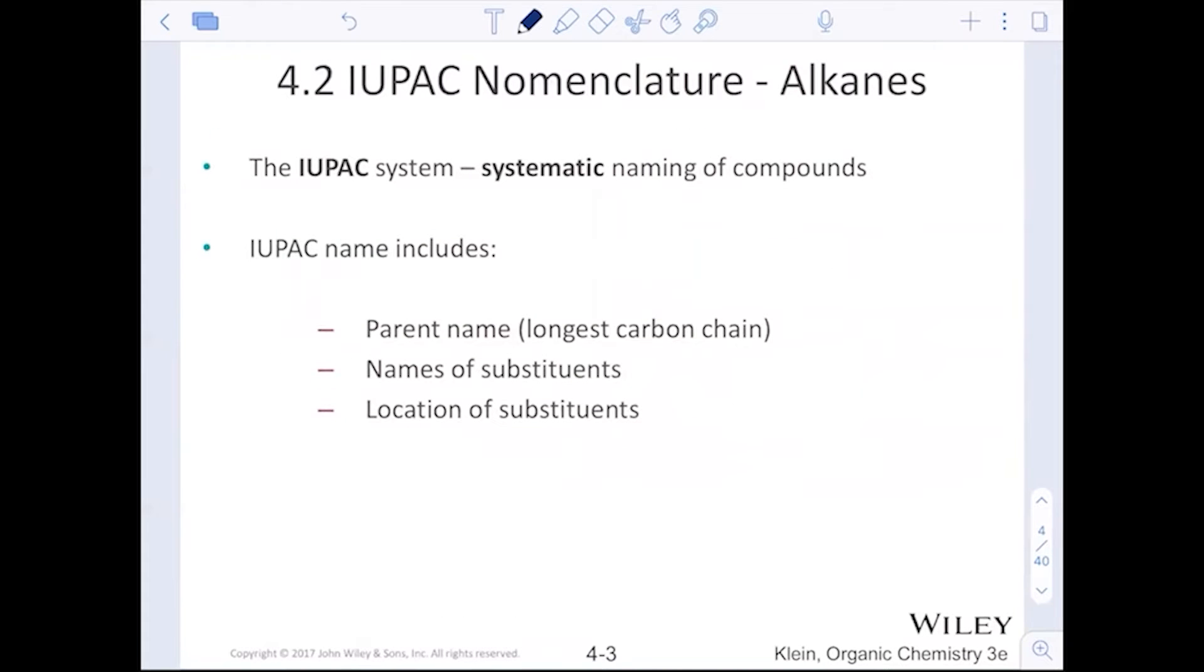We are going to be using the IUPAC nomenclature of alkanes. Again, IUPAC is a systematic way of naming. You might have heard IUPAC back in the day in general chemistry when you were learning naming of some ionic and covalent compounds. Now for organic compounds, naming is a little bit different because we are dealing with hydrocarbons because we want to make sure that this system of naming covers every imaginable type of compound.